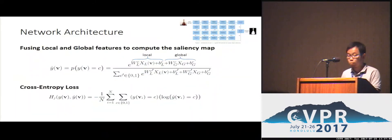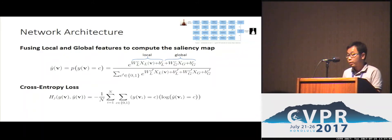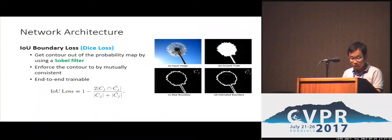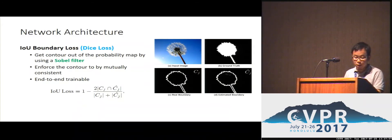The softmax function was used to compute the saliency probability of each pixel by fusing the global and local features. After getting the probability map, an IOU boundary loss is used to penalize the non-overlapping ratios between the estimated boundary and the real boundary, and this loss function is end-to-end trainable.